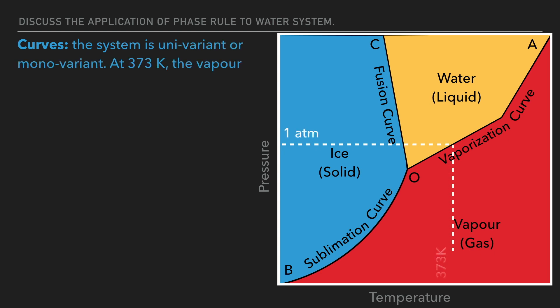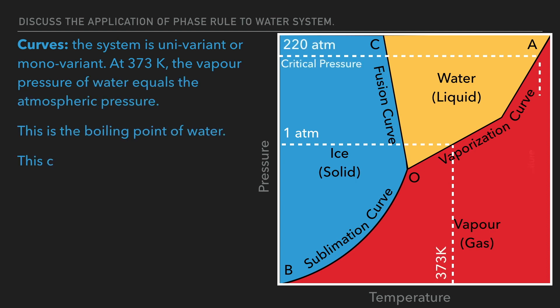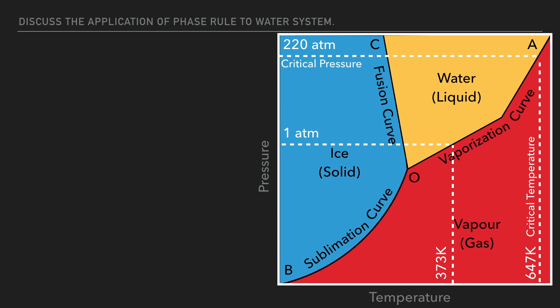At 373 Kelvin, the vapor pressure of water equals the atmospheric pressure. This is the boiling point of water. This curve extends up to the critical temperature of water which is 647 Kelvin.